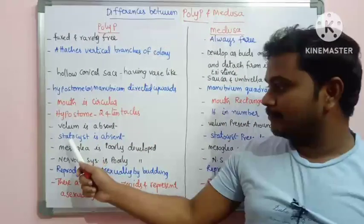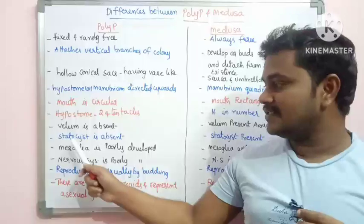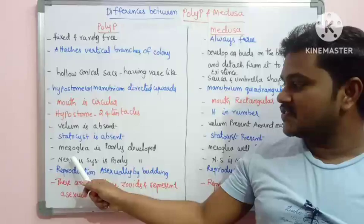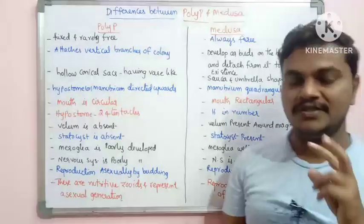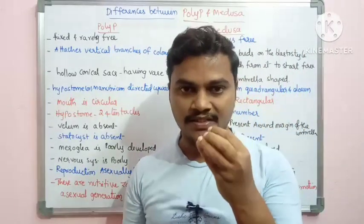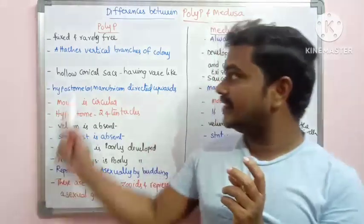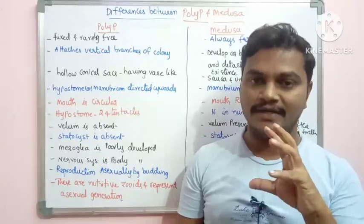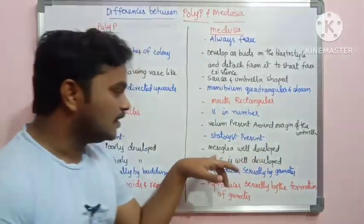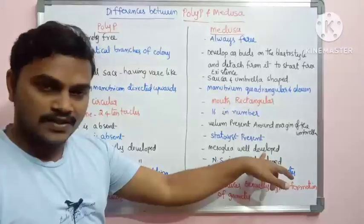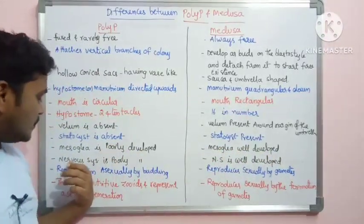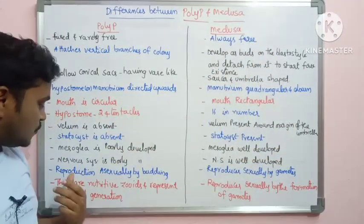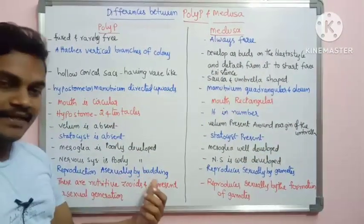Statocyst, which is the balance organ, is absent in the polyp but present in the medusa. Mesoglea is poorly developed in the polyp but very well developed in the medusa. The nervous system is also well developed in the medusa.